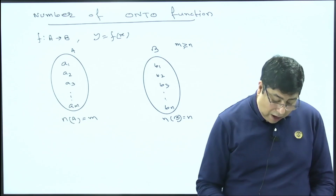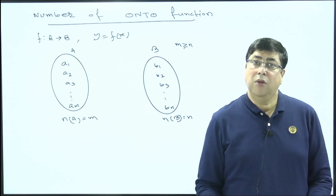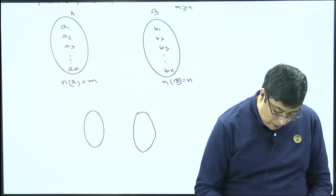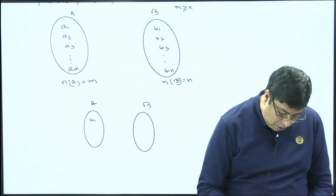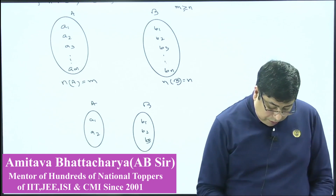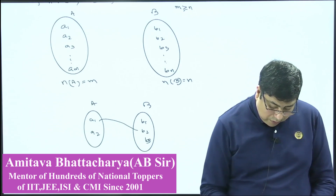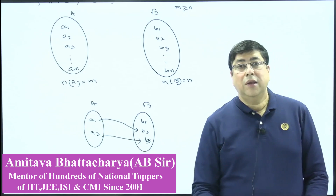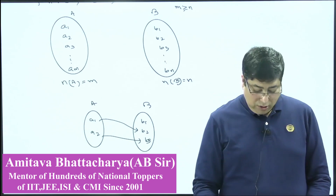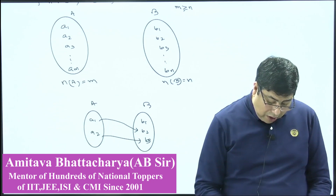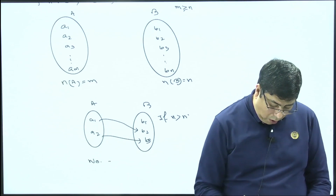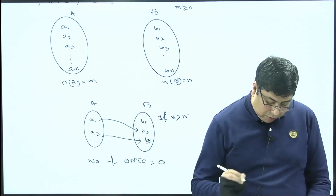First, consider the case where n > m. Suppose set A contains two elements A1, A2 and set B contains B1, B2, B3. If the image of A1 is B2 and image of A2 is B3, then B1 has no pre-image in set A — so this is not onto. Therefore, when n > m, the number of onto mappings equals 0.